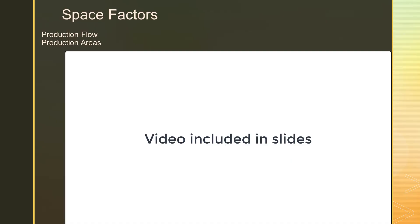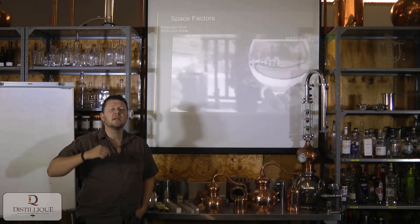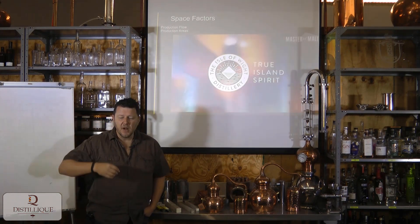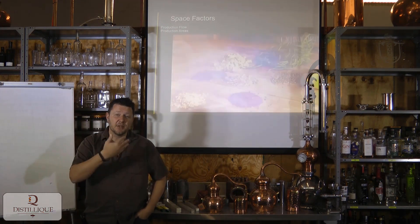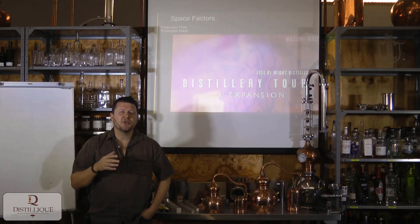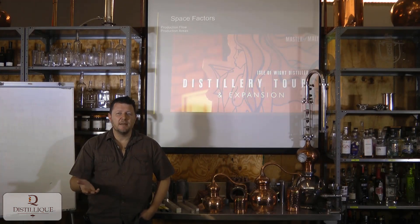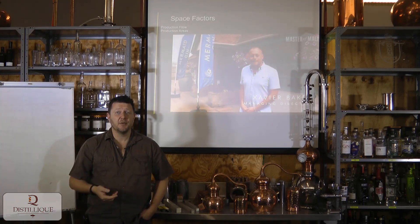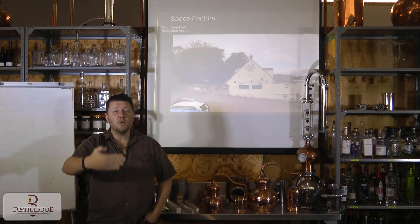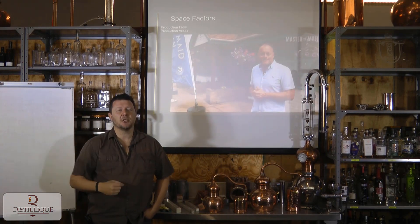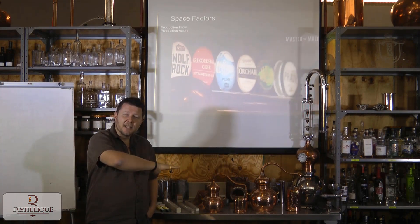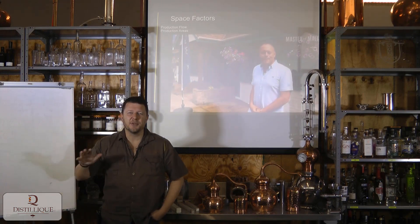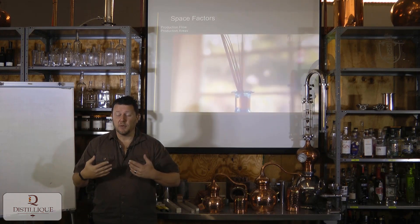The first lesson is going to be regarding space factors — in terms of your area, the space you're utilizing, the layout, and so forth. We're going to look at production flow specifically, as well as production areas. Anybody who's ever worked in manufacturing, or for that matter followed a recipe in a kitchen, would know there is a certain order in which things need to happen. When you upscale that to a commercial level, there has to be a design in place to allow for this flow and to allow for the movement of raw materials.